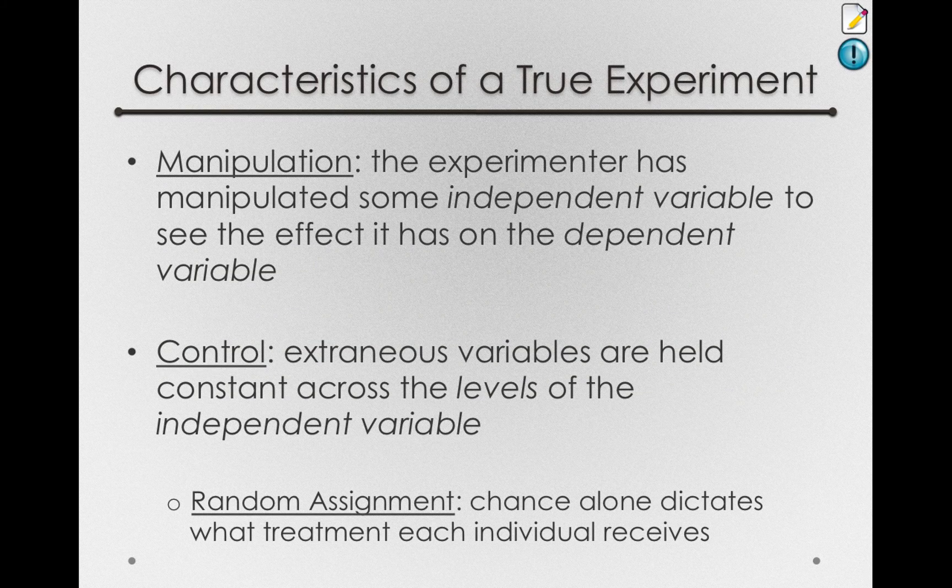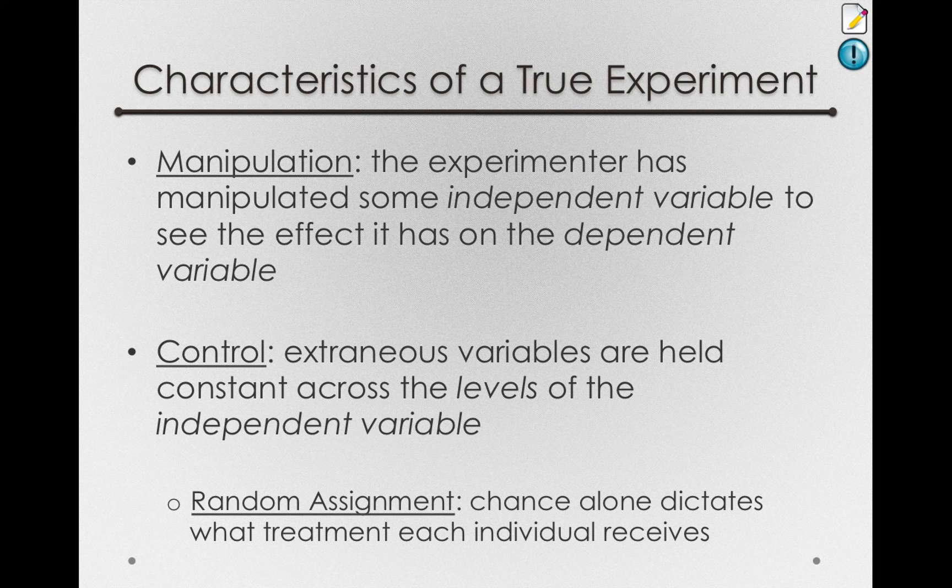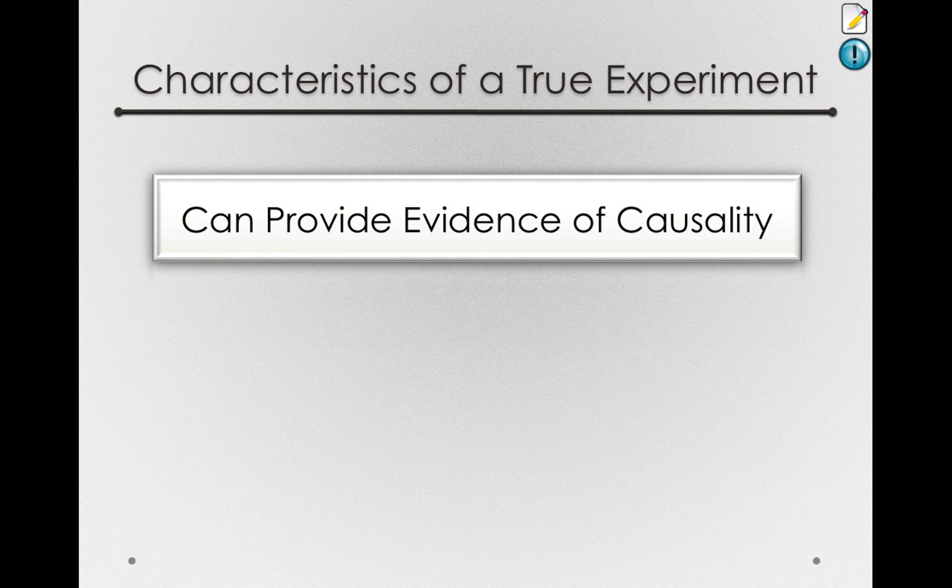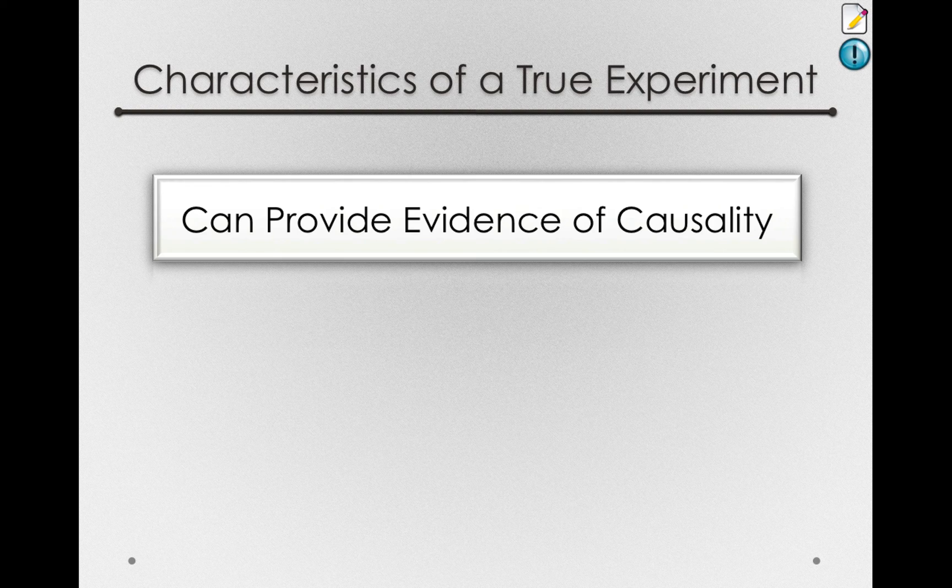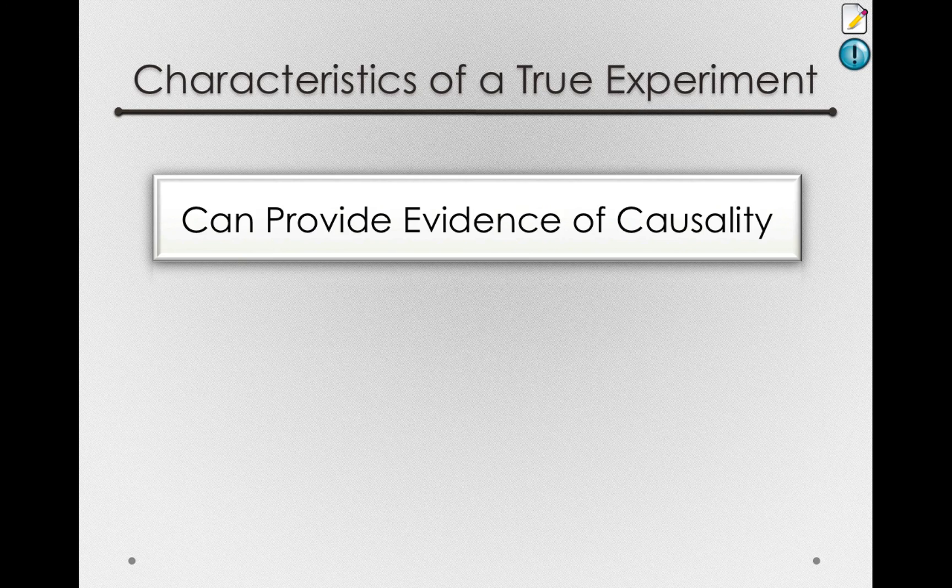With these characteristics, manipulation and some type of control over extraneous variables, true experiments gain one very important property: they can provide evidence of causality. This is why true experiments are needed for any kind of FDA drug trials or for any type of situation where we really need to know whether one thing is causing something else. Only true experiments can definitively show causation.